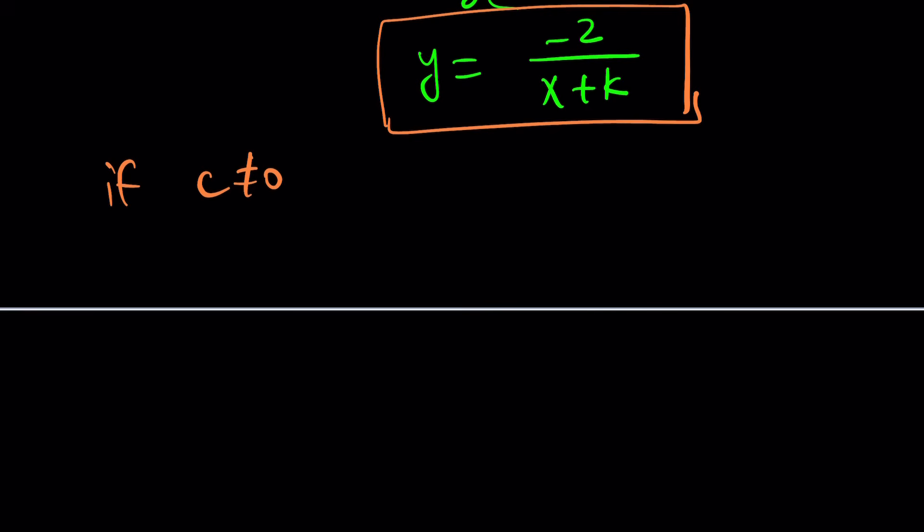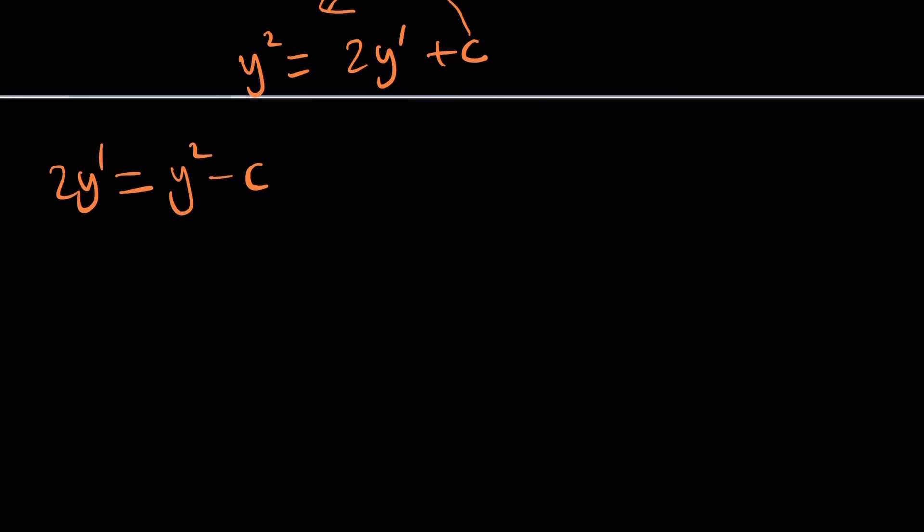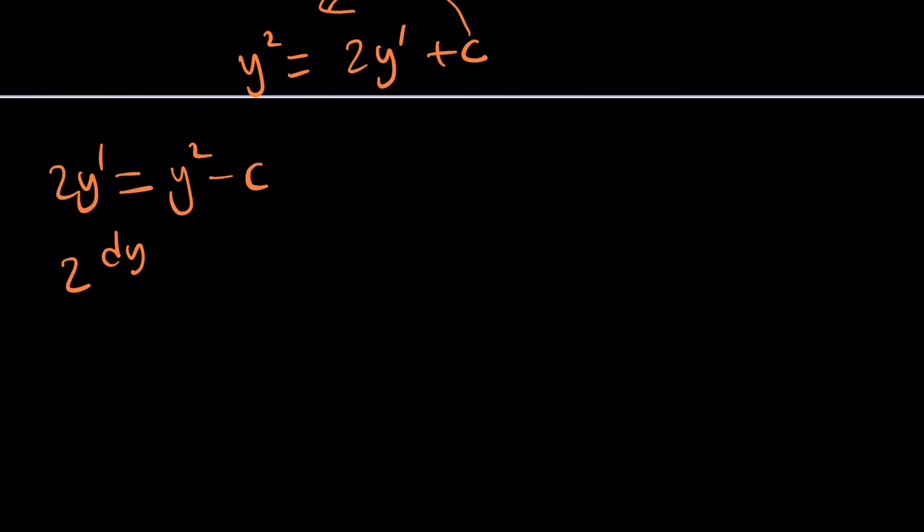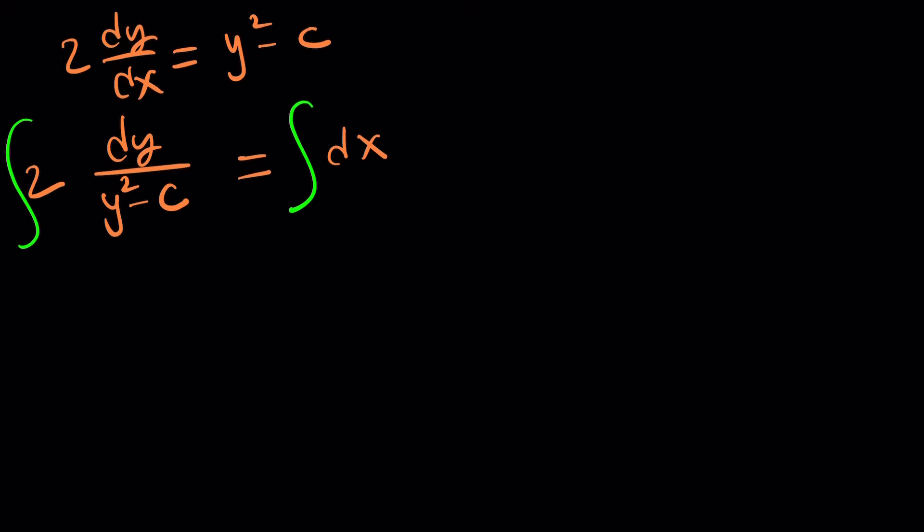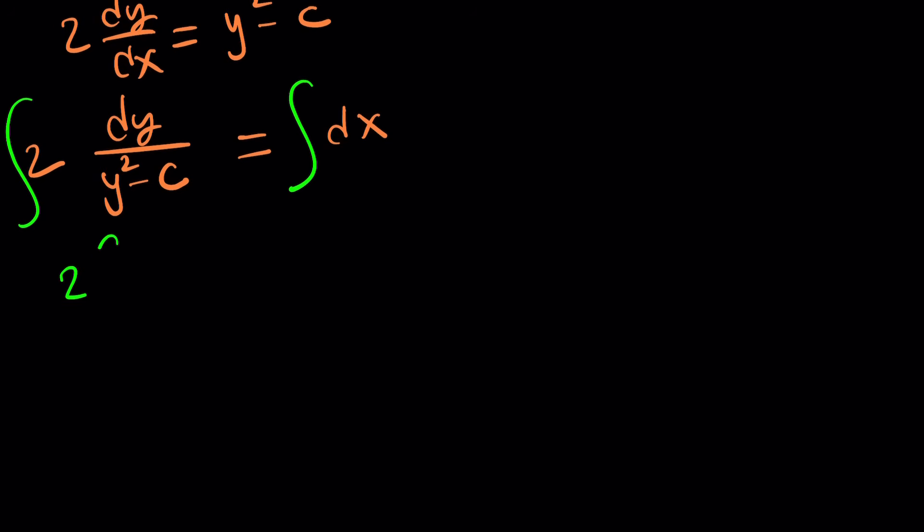So if c does not equal 0 we get y squared equals 2y prime plus c. And then I'm going to go ahead and subtract c from both sides. And then maybe put the 2y prime on the other side. So switch sides. And then notice that y prime is dy over dx. I think this is more understandable. And then now let's go ahead and separate the variables. Put the dy here with the y squared minus c. And that's equal to, well I guess I could leave the 2 there and put the dx by itself.